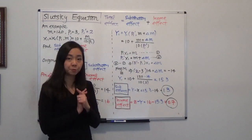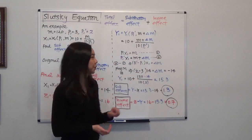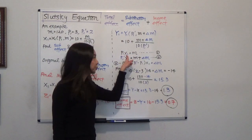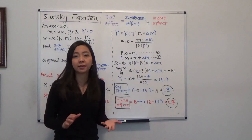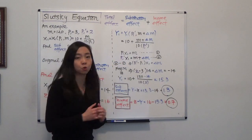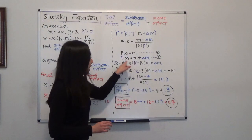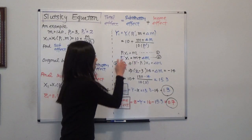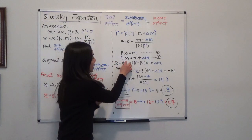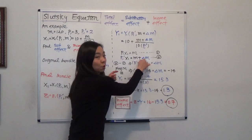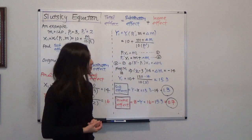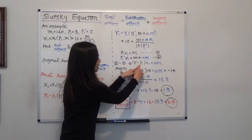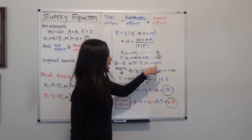We know the original bundle satisfies P1 times X1 equals M — that is the price of milk times the original quantity consumed equals income. After the price changes to P1', I will give you or take away money so that the original bundle X1 is still affordable: P1' times X1 equals the new income. Subtracting equation 1 from equation 2, we get (P1' minus P1) times X1 equals delta M.